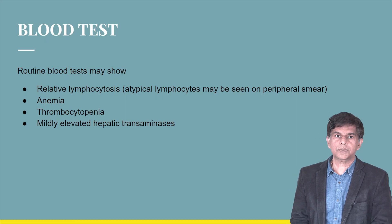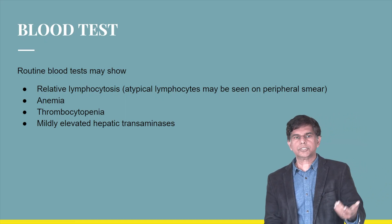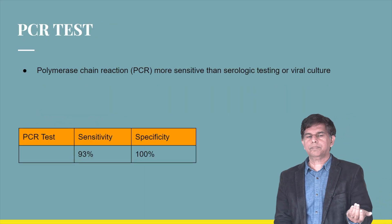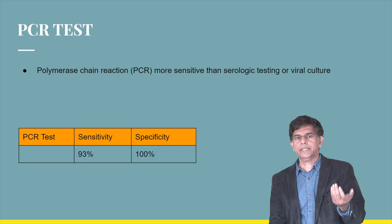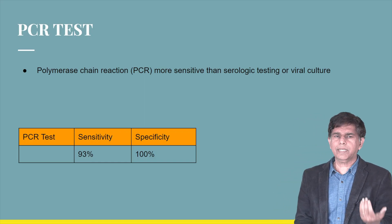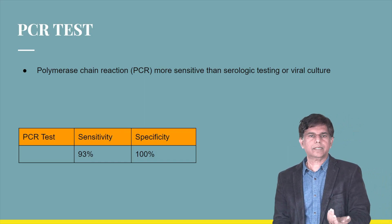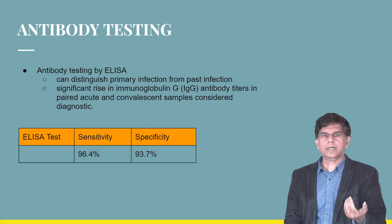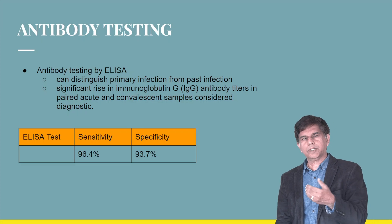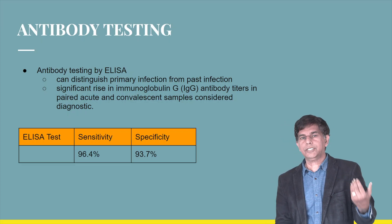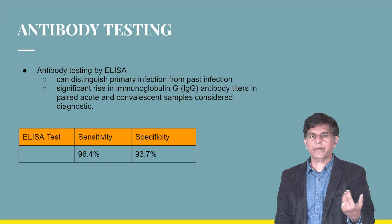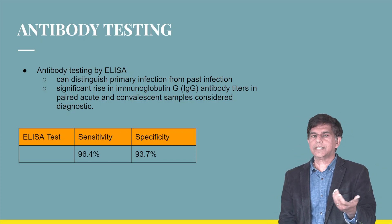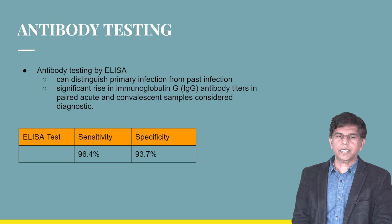Regarding sensitivity and specificity of tests: PCR is a highly sensitive test — sensitivity 93%, specificity up to 100% — and is especially important in immunocompromised patients. ELISA antibody testing can distinguish primary from past infection, with IgM indicating recent infection and IgG indicating previous infection. ELISA sensitivity is approximately 96% to 93%.